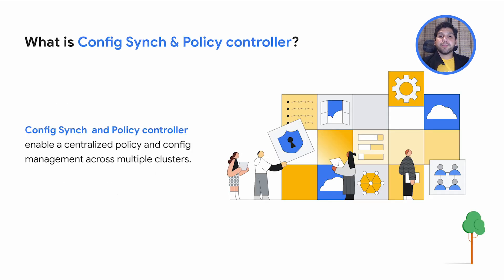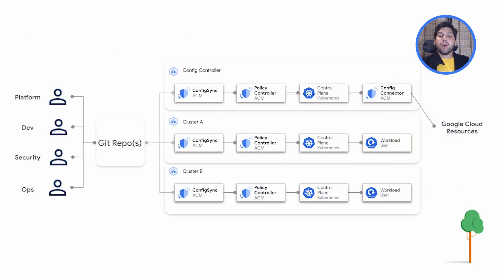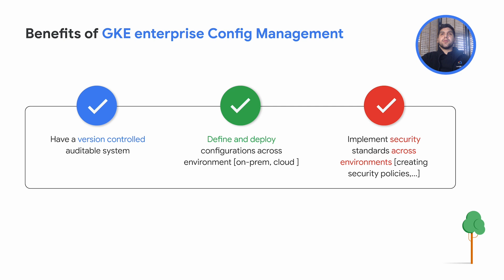As companies expand the number of development and production clusters they use, creating and enforcing consistent configurations and security policies across a growing environment is difficult and creates friction. That is where Config Sync and the Policy Controller come in. Config Sync is a GitOps-driven config management tool which allows app developers to focus on application logic, have application code and policies managed using GitOps, and integrate into existing CI/CD pipelines. The Policy Controller gives you many out-of-the-box policies to help with governance and keeping up with best practices.